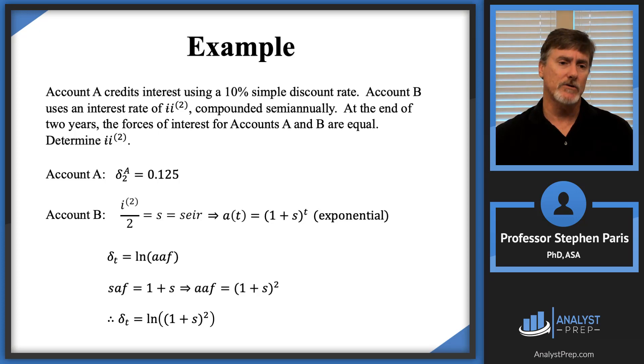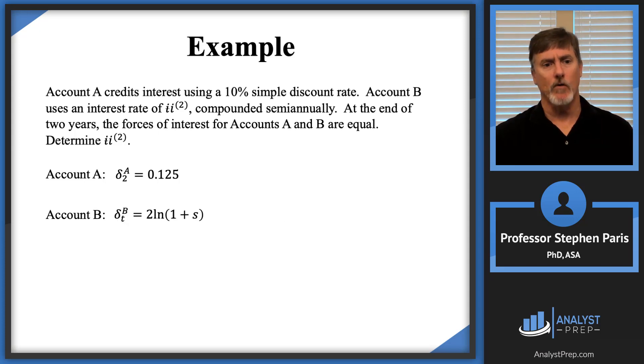So then I plug that back in and I see that the force of interest is going to be the natural log of 1 plus S squared. And then I can use properties of logarithms, bring the 2 down if I like, and write this as 2 times the natural log of 1 plus S. So for account B, the force of interest at time T is 2 times the natural log of 1 plus S.